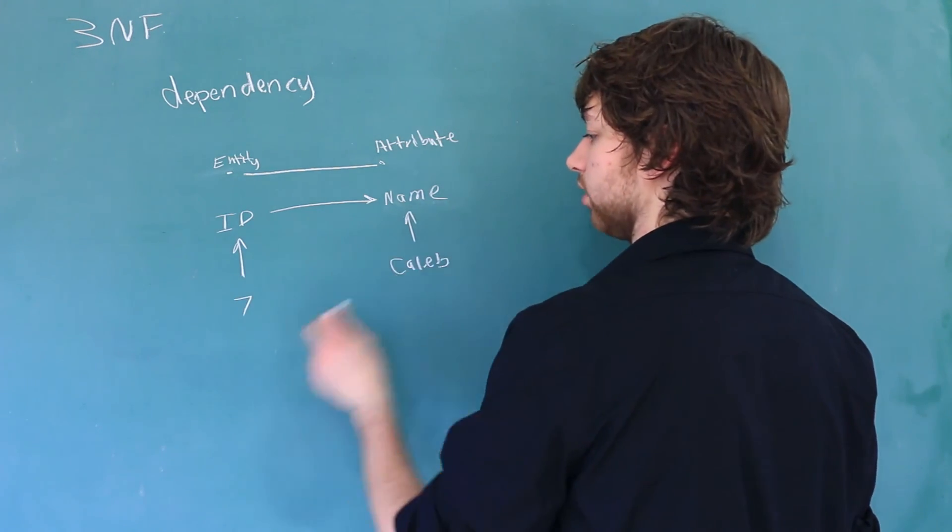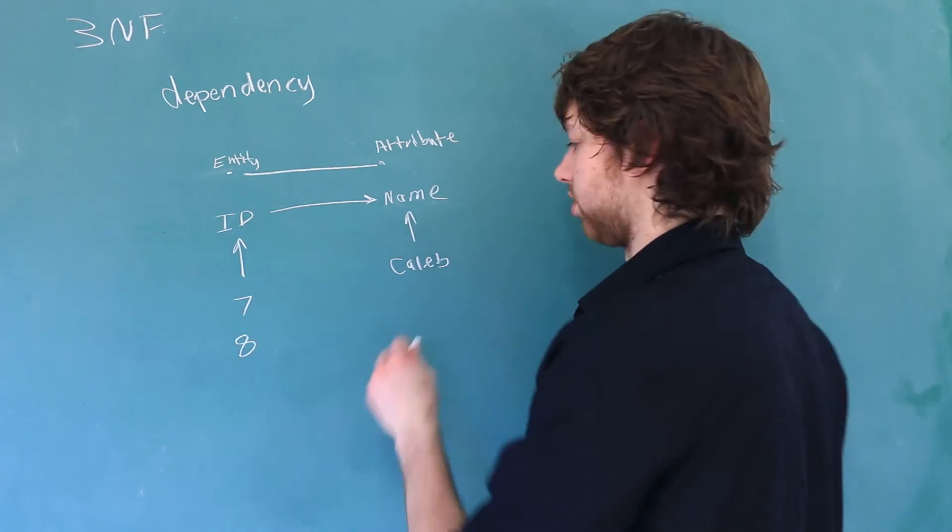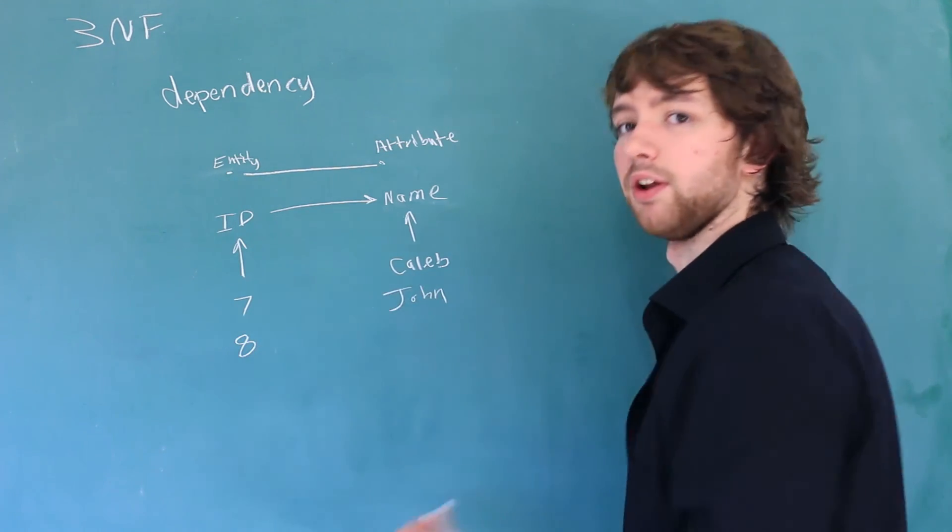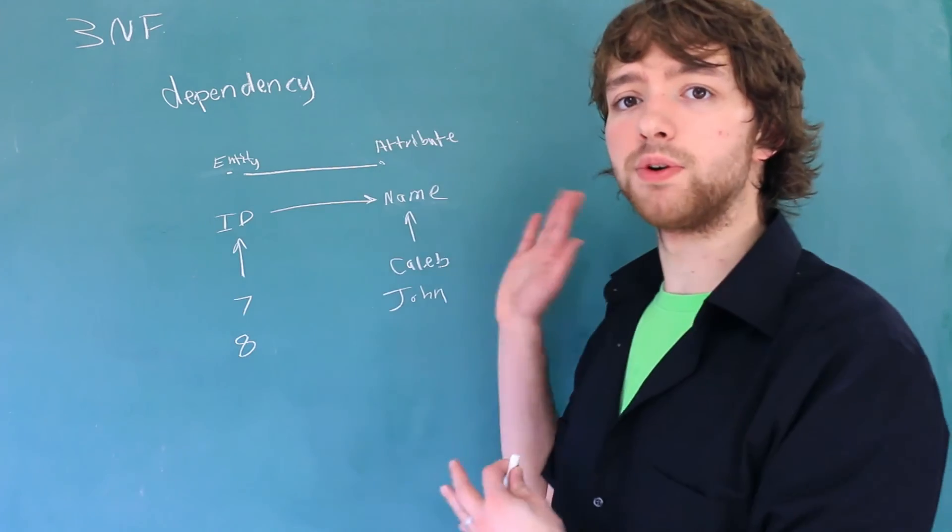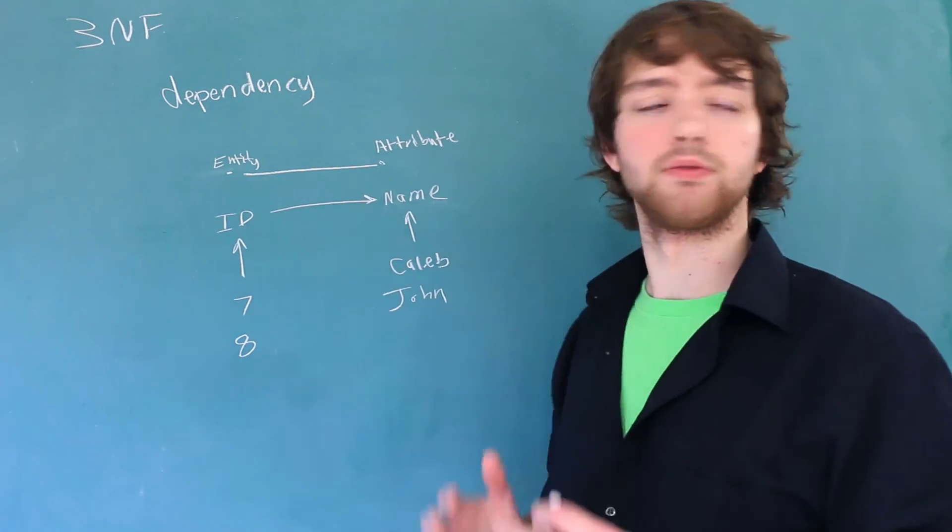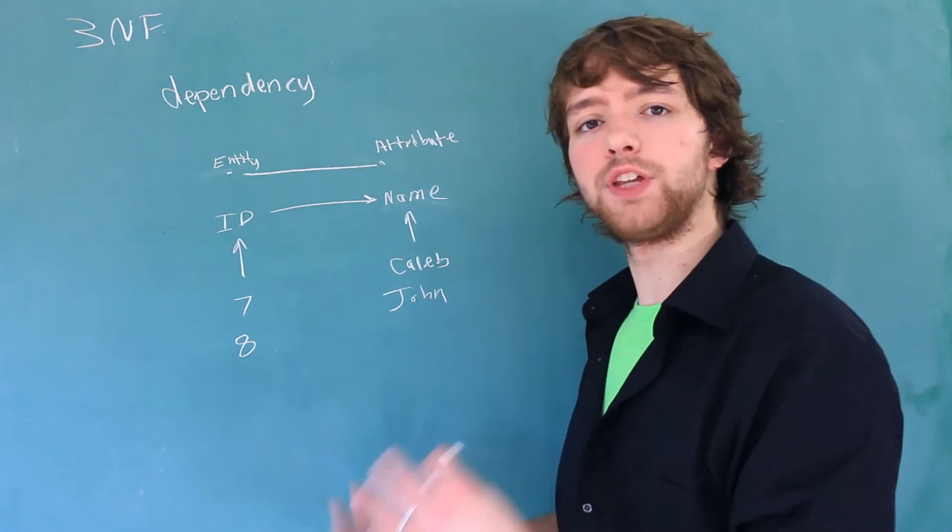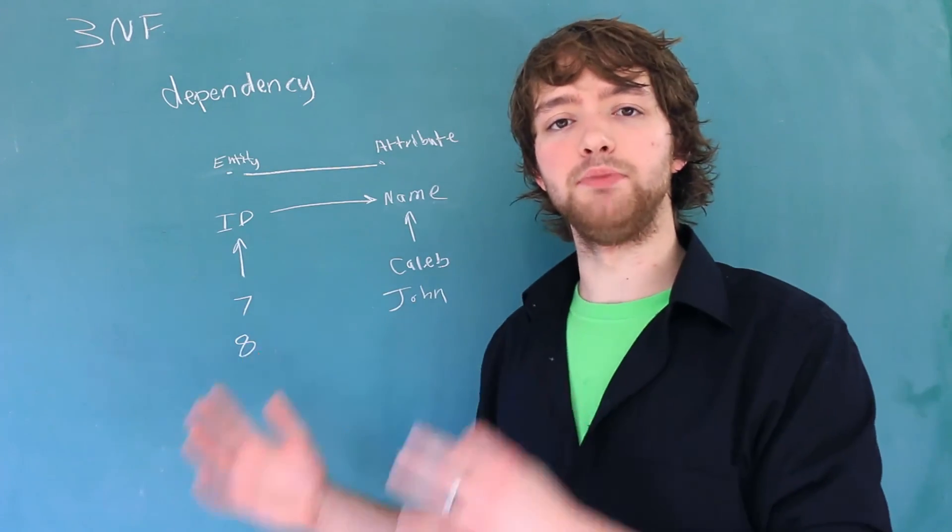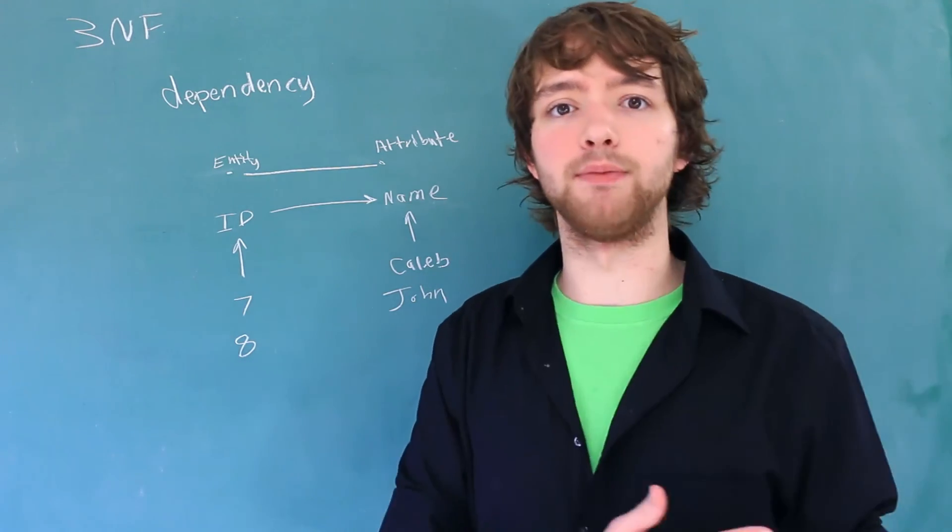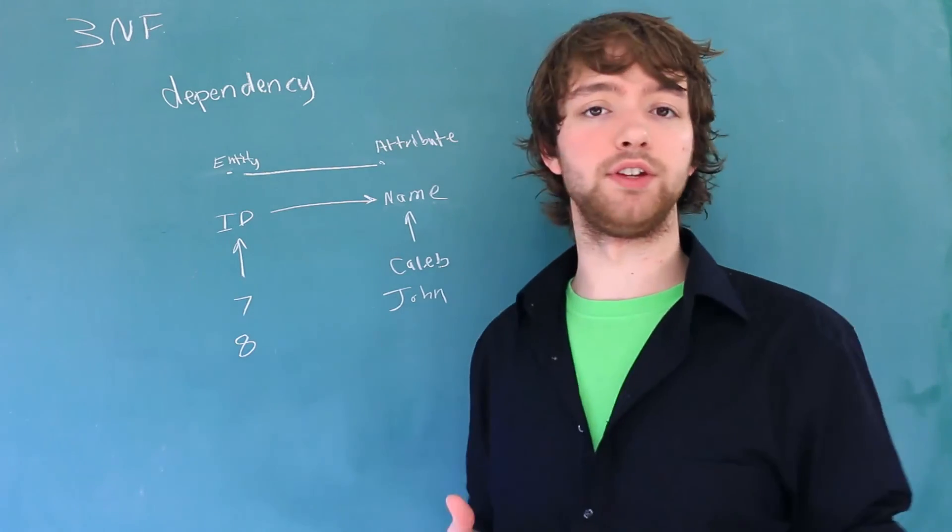So 7 Caleb, 8 might change it to something else. That's because we're talking about a different entity. So essentially, all we're saying is that all of the columns inside of a table depend on the primary key of that row or whatever the table is about.